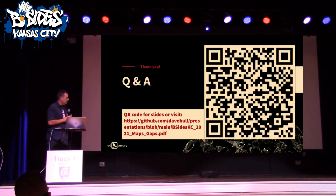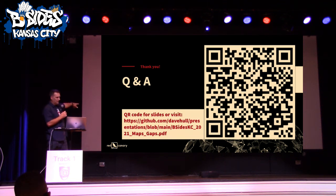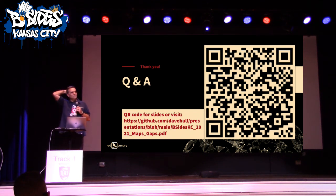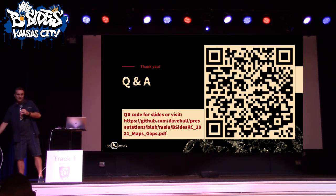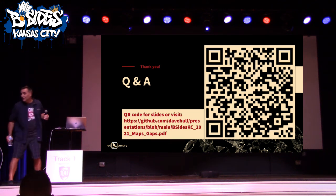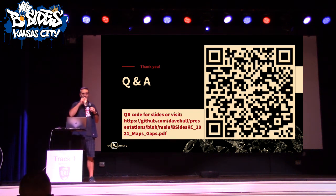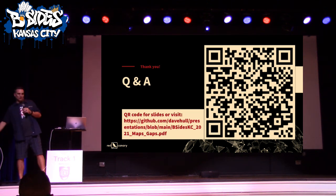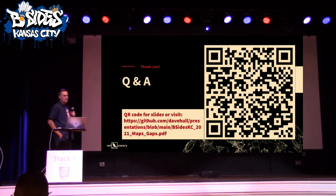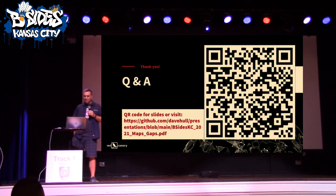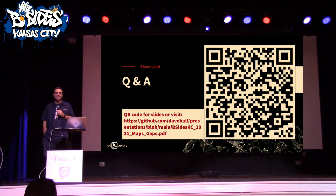With that, I'll open it up to Q&A. Slides are available — scan the QR code, or if you don't trust QR codes, there's a URL you can punch in. The chess puzzle answer: move the knight into positions where you can fork on both roads — though apparently that's not what the chess puzzle website says.